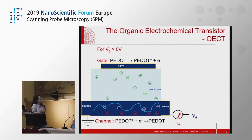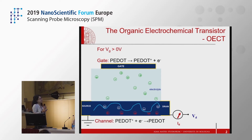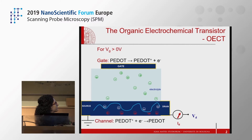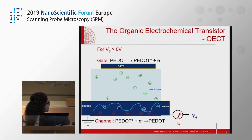These devices are three-terminal devices in which a thin film of an organic semiconductor is deposited between source and drain electrodes, and an electrolyte keeps the ionic contact between the channel of the device and the gate electrode. The basic principle of these transistors relies on the capability to reversibly switch the redox state of the organic semiconductor upon gate action across the electrolyte.